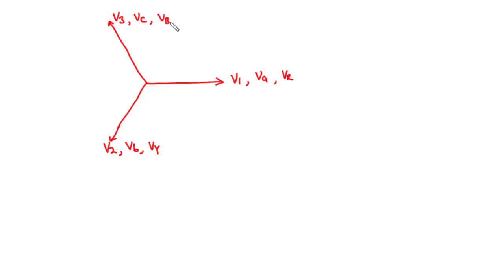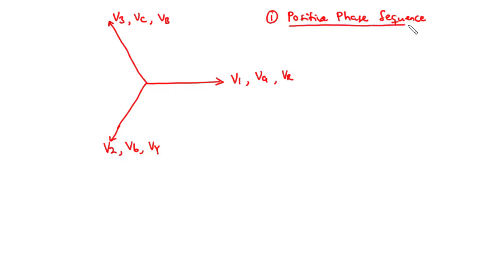If the naming is done in the clockwise direction, then we have what is called the positive phase sequence. That is, in the clockwise direction, we have A, B, C, A, B, C — and that is the positive phase sequence.